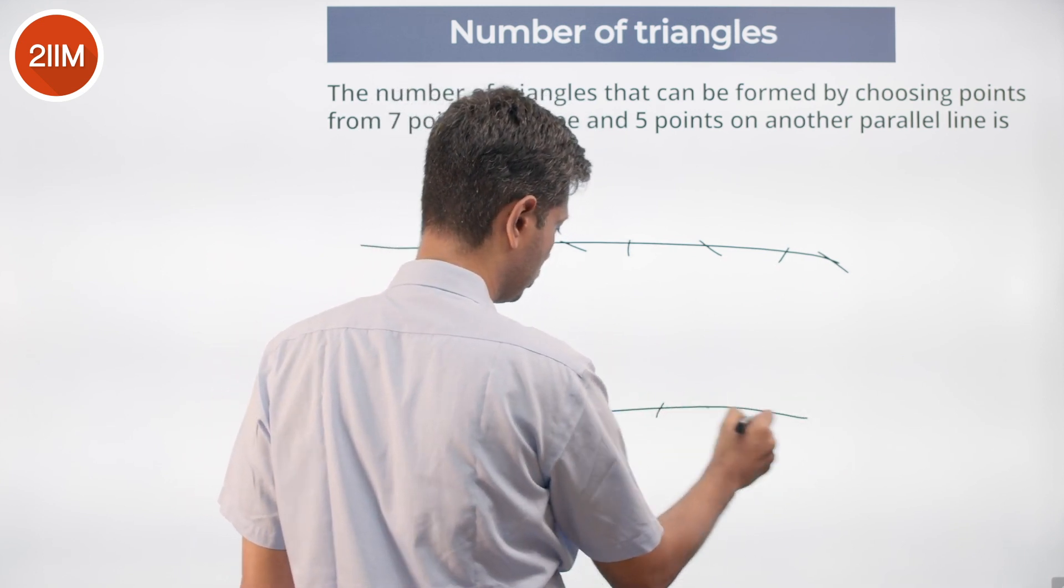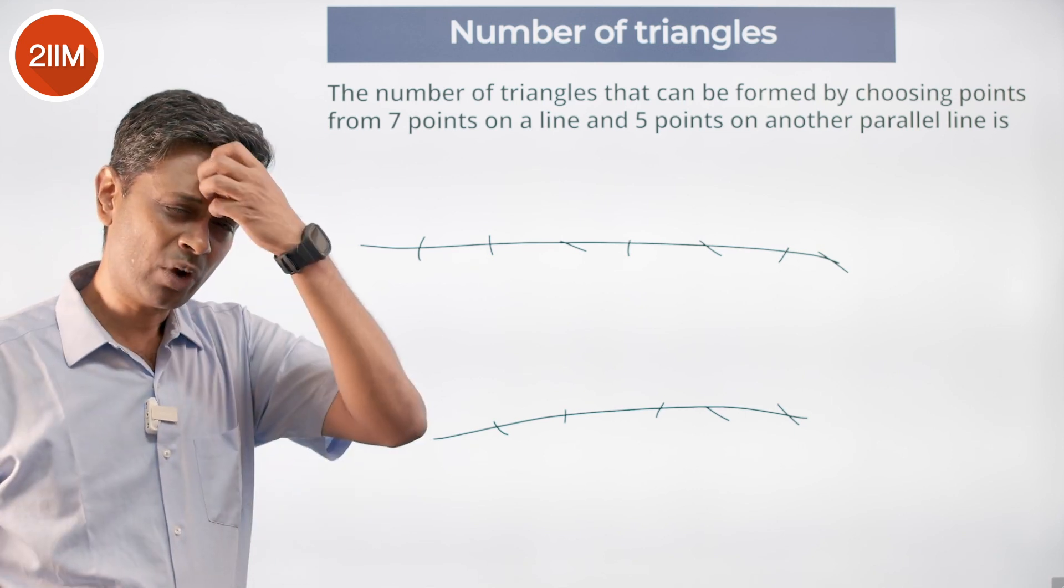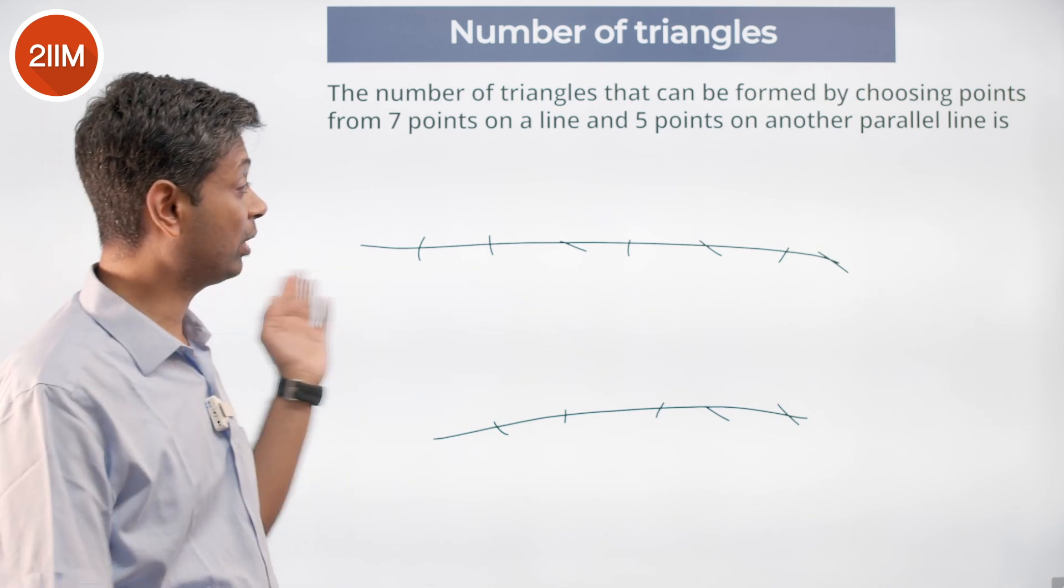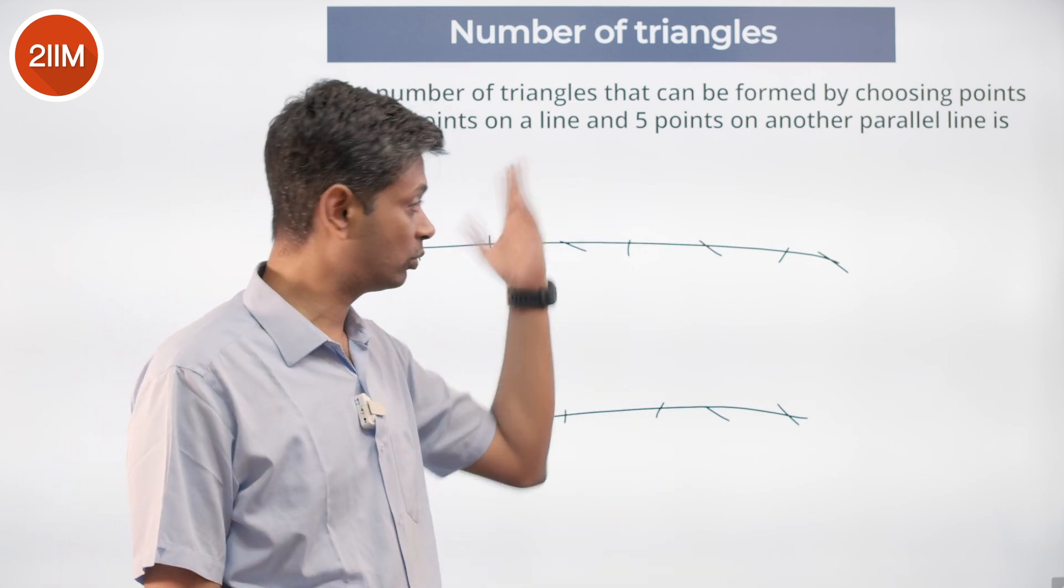One, two, three, four, five. I have to form triangles. I cannot have three points from the same line forming a triangle, so I should either have two points here and one here, or two points here and one here.